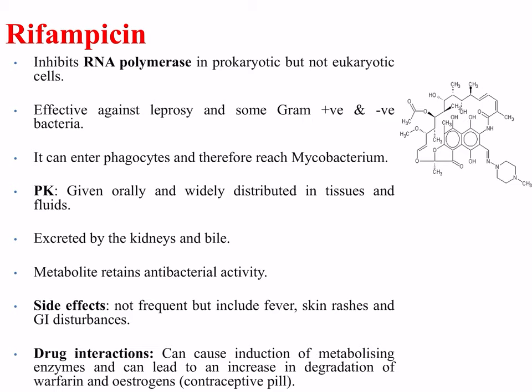Our second drug used in TB therapy is rifampicin. It inhibits RNA polymerase in prokaryotic but not eukaryotic cells. It is also effective against leprosy, also caused by a mycobacterium, and some gram-positive and gram-negative bacteria. It can enter phagocytes and therefore reach mycobacterium in the alveolar macrophages. It is given orally and is widely distributed in tissues and fluids; it is excreted by the kidneys and bile, and its metabolites retain antibacterial activity. Side effects include fever, skin rashes, and gastrointestinal disturbances. Drug interactions include induction of metabolizing enzymes, leading to increased degradation of warfarin and estrogen, common in the contraceptive pill.